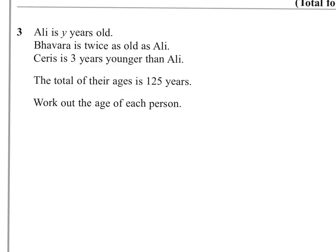Question three, it says Ali is y years old. Okay, and Bhavara is twice as old as Ali, so that would mean that Bhavara would be 2y or 2 times y years old. And it says Ceris is 3 years younger than Ali.